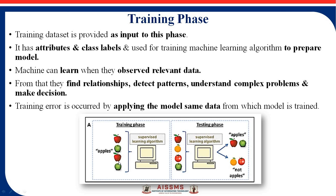Here, images of apple along with the label 'apple' are provided as input to the machine for training purpose. The machine learns when it observes relevant data — it learns from the labels and from the images. The machine identifies the relationship between each image, identifying pattern structure, color, and characteristics of each image using different algorithms. This phase is called the training phase.